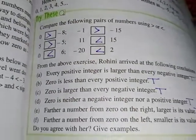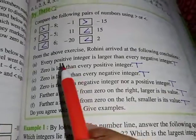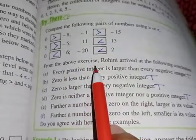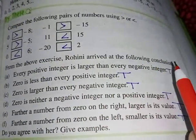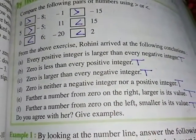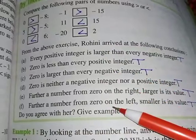In this clip, we'll see a few points from the above exercise. Now, Rohini arrived at the following conclusions. Rohini thought all these things in her mind - whether they are correct or not, we have to say.